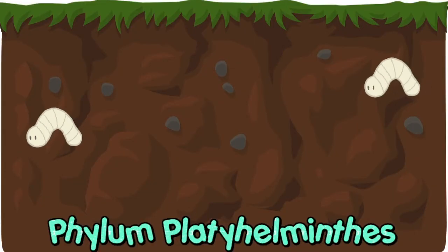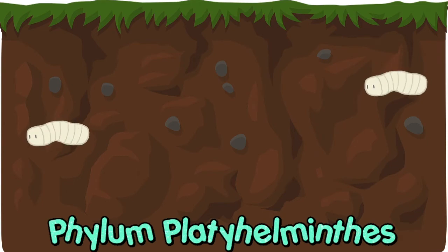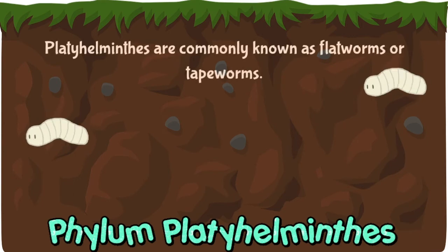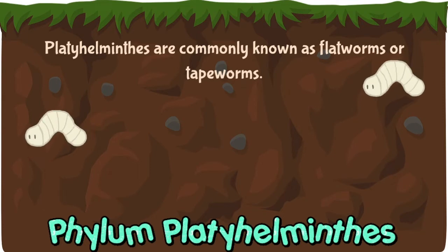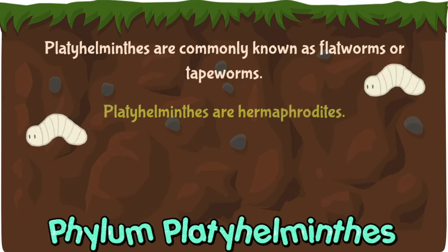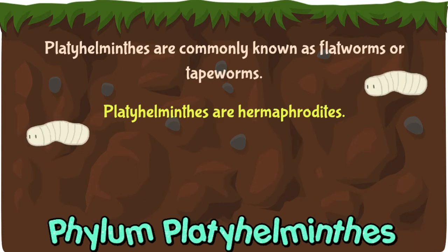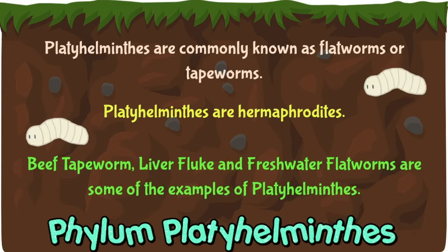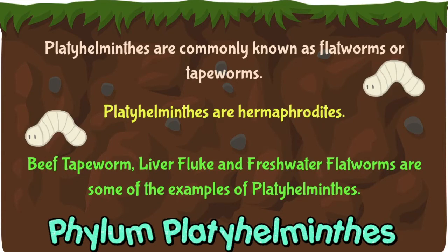Now we have phylum Platyhelminthes. Platyhelminthes are commonly known as the flatworms or tapeworms. They are hermaphrodites, meaning both male and female organs are present in the same body. Tapeworms, liver fluke, and freshwater flatworms are some examples of Platyhelminthes.